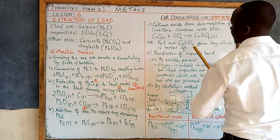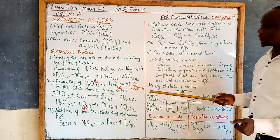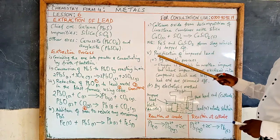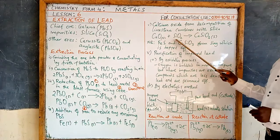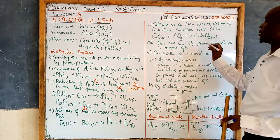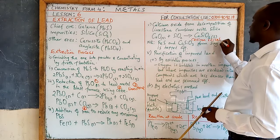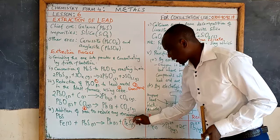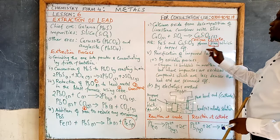Step five: calcium oxide from the limestone combines with silica. Silica is the impurity found in the ore, and this is how the silica impurity is removed — as calcium silicate. The iron(II) sulphide formed and the silica combine to form slag, which is tapped off.